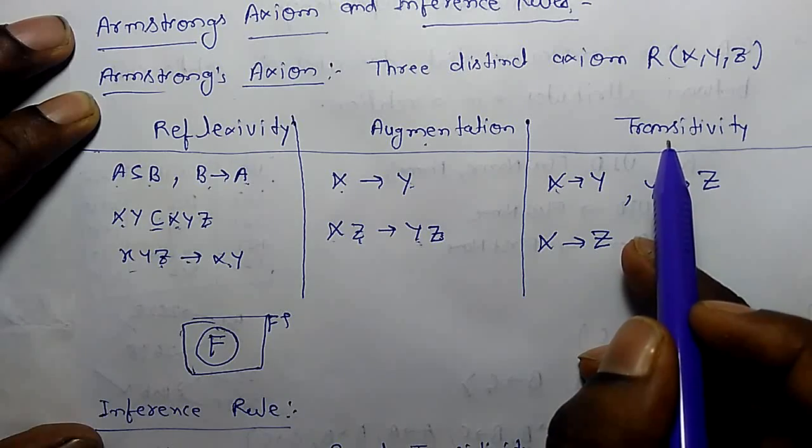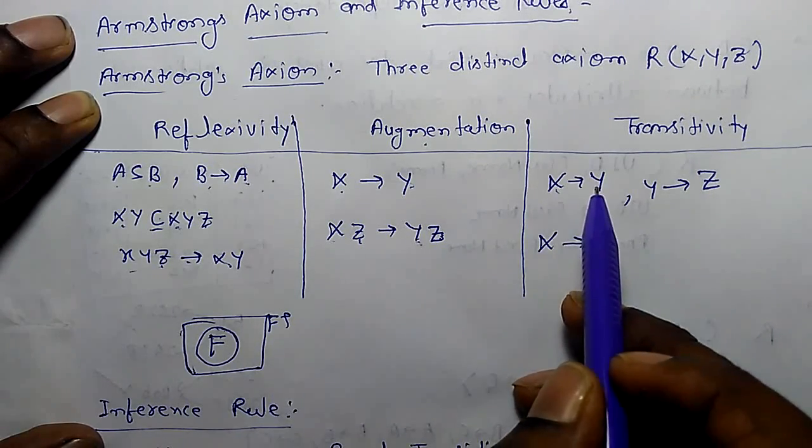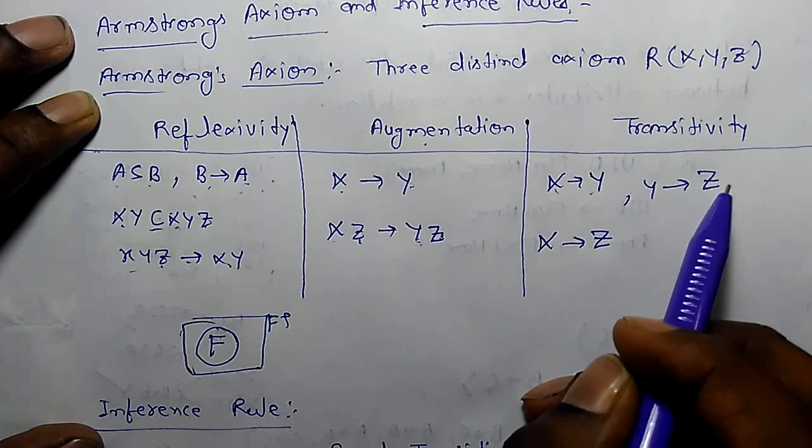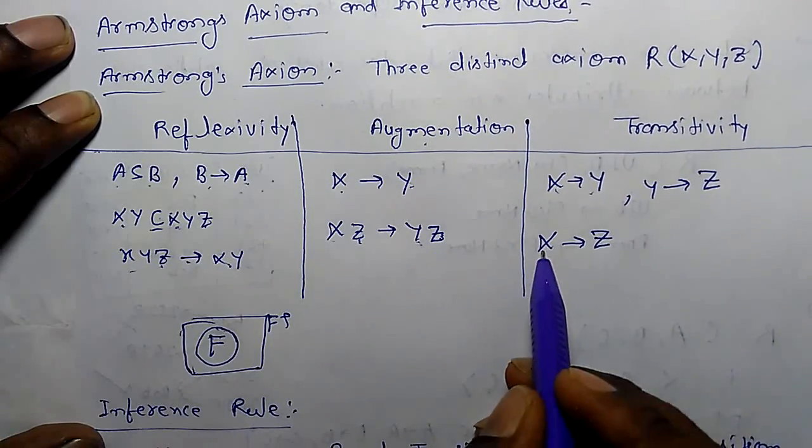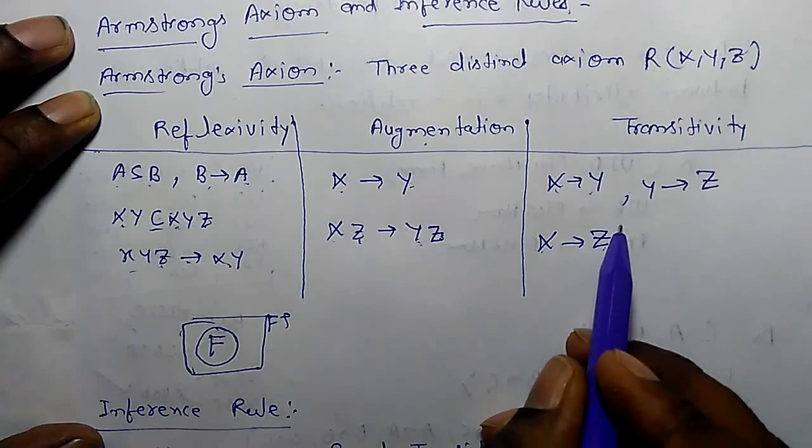Third rule is transitivity. Where x functionally determines y and y functionally determines z, we can say x also functionally determines z. This is the transitivity rule.